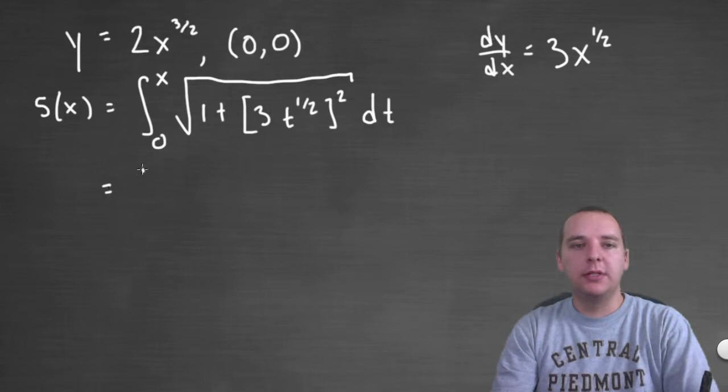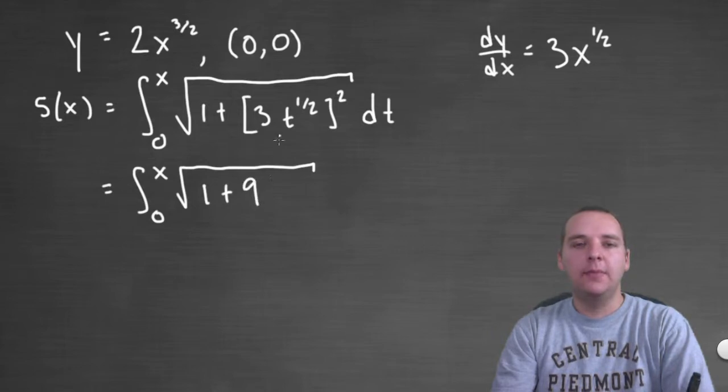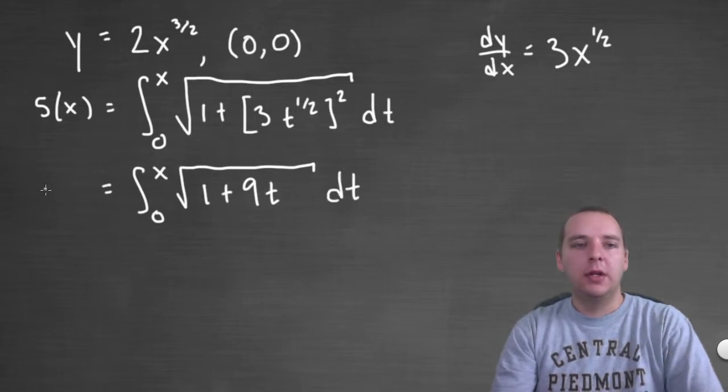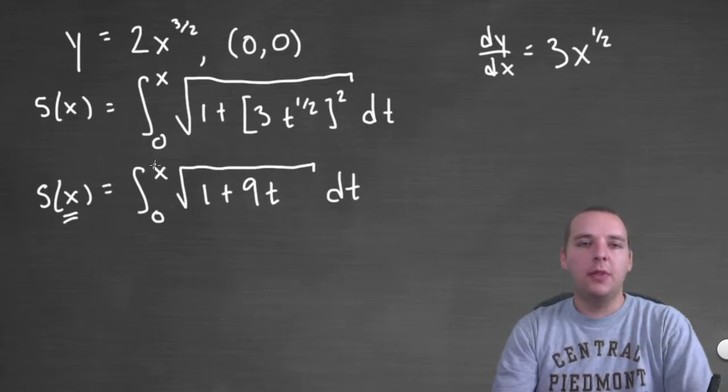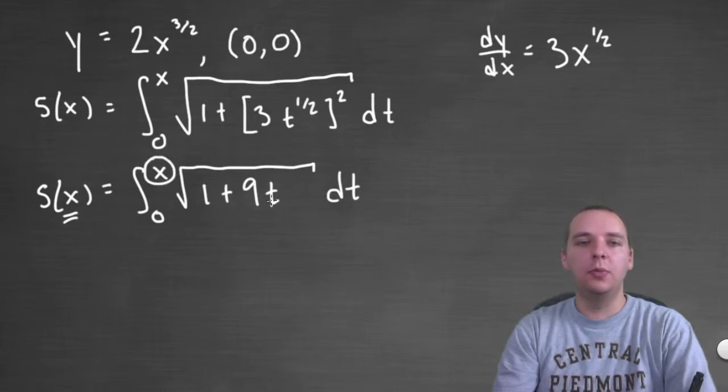Alright let's work through some of this algebra. Integral zero to x we'll have the square root of, let's see, one plus 3 squared is nine. And the square root of t squared or t to the 1 half squared would just be t dt. So that will be our arc length.